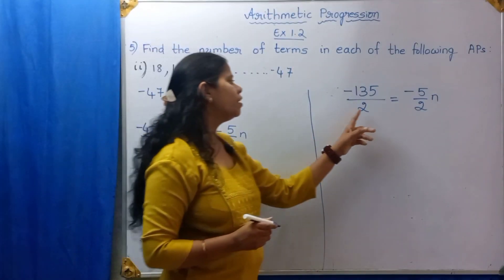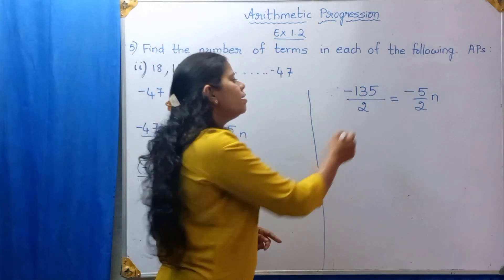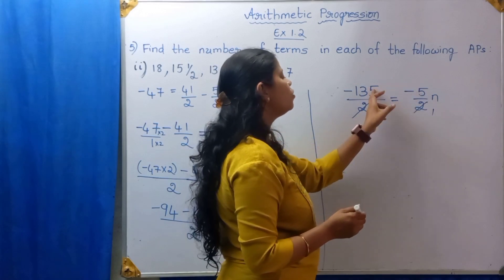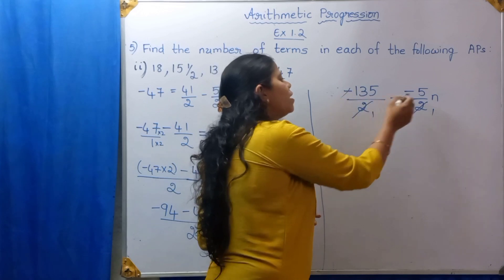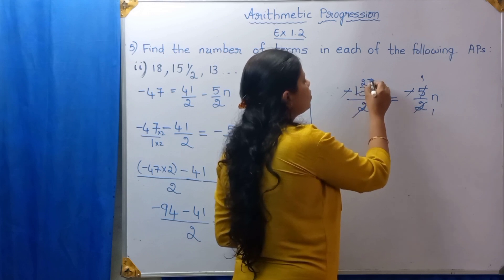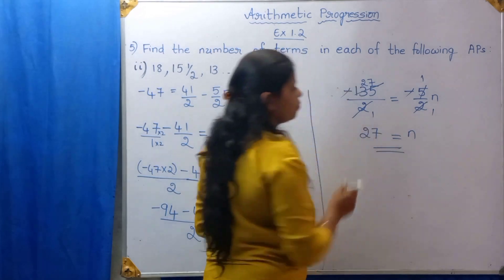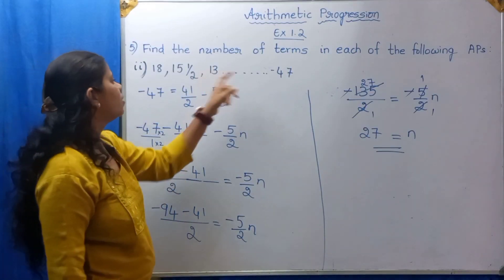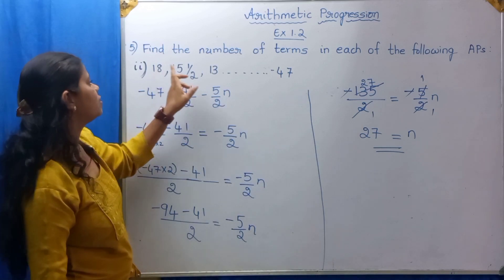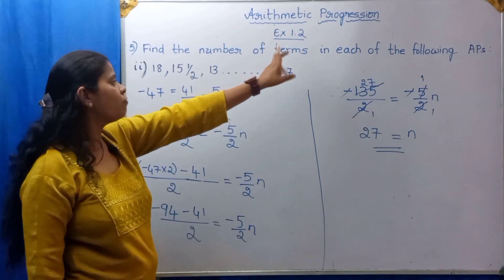Now the 2 in the denominator on both sides cancels. Then the minus signs cancel, and we can cancel 5 from both numerator values: 135 divided by 5 is 27. Therefore, N is equal to 27. The meaning of the question is that minus 47 will come in the 27th place of the AP. The first term is in the first place, second in the second place, third in the third place — and likewise minus 47 is in the 27th place.